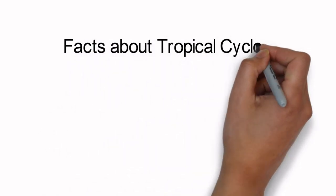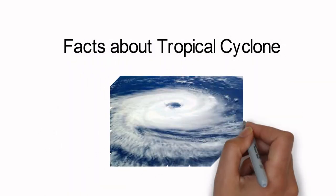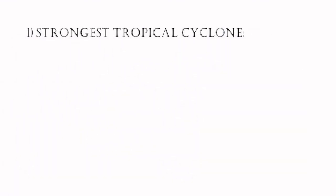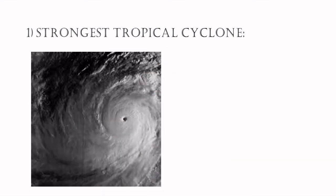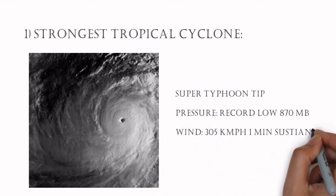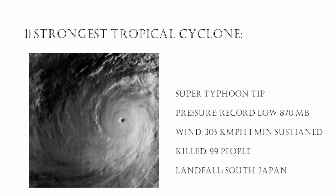Let us see few facts about tropical cyclones. The strongest tropical cyclone recorded in the world is Typhoon Tip. It had 870 hPa minimum pressure and peak sustained wind of 305 kmph. It made landfall in southern Japan on October 19 and killed about 99 people.